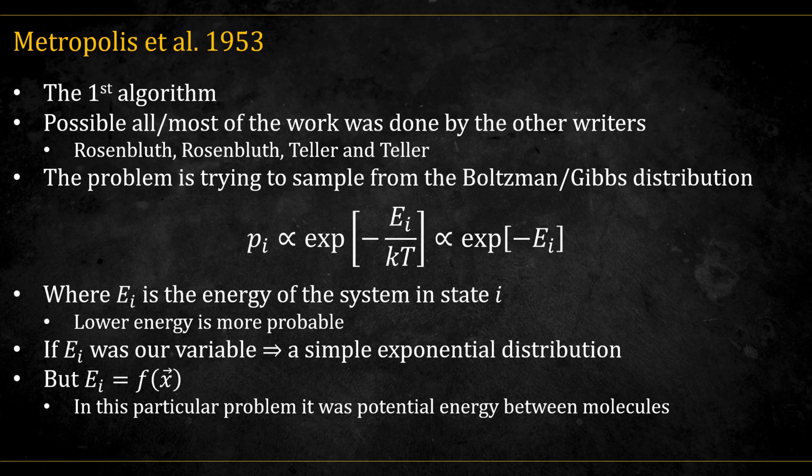So what problem were they trying to solve? It came from physics, specifically sampling from the Boltzmann distribution, also called the Gibbs distribution. And just to be clear, this has nothing to do with Bayes or Bayesian statistics. The problem is simply how to sample from a very complicated distribution. The Boltzmann distribution says that the probability of a state is proportional to the exponential of the negative energy of that state. In other words, high energy states are less likely and low energy states are more likely. There's the Boltzmann constant k and the temperature T in the formula, but those don't matter for our purposes.